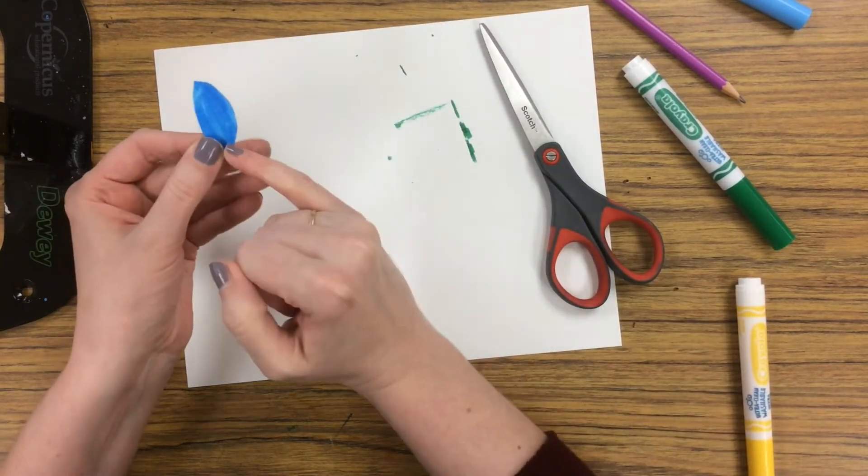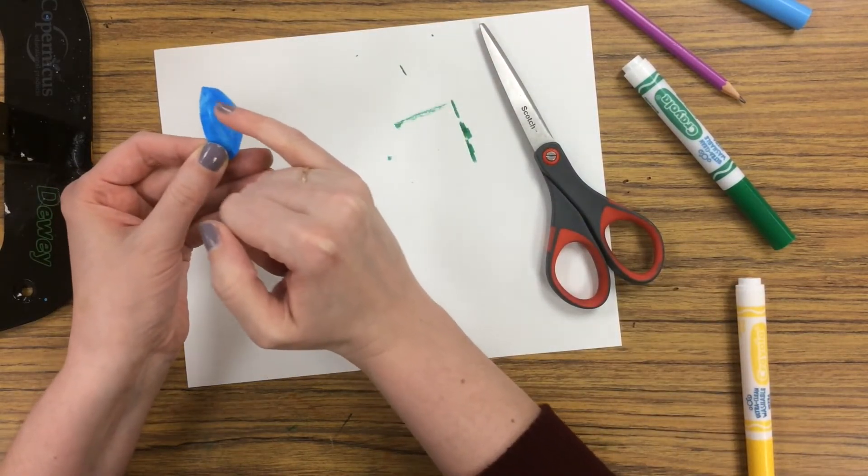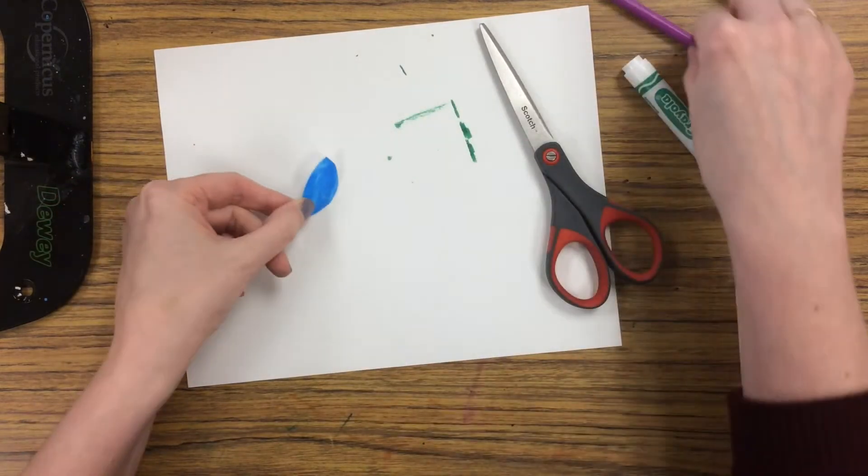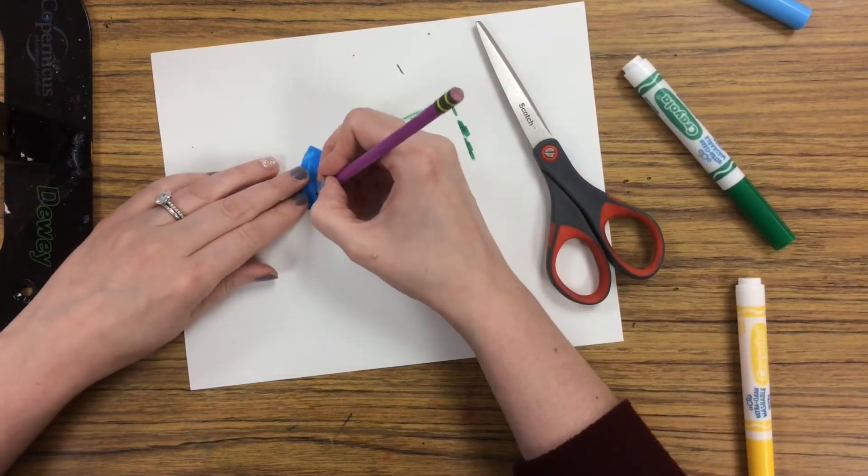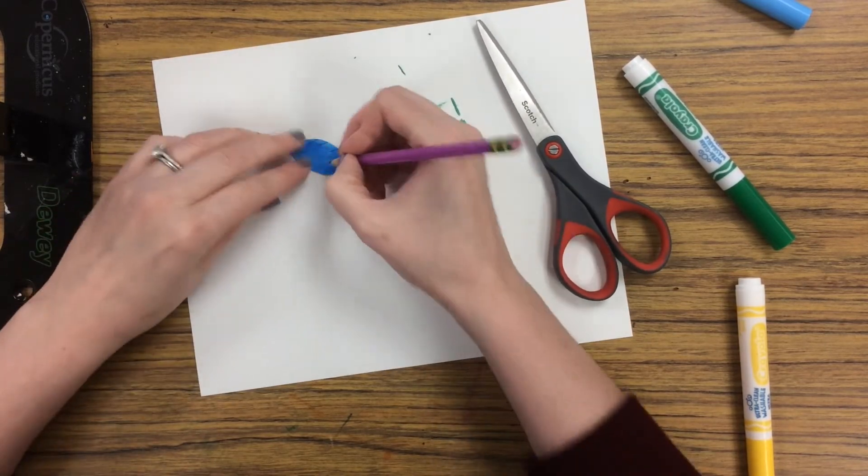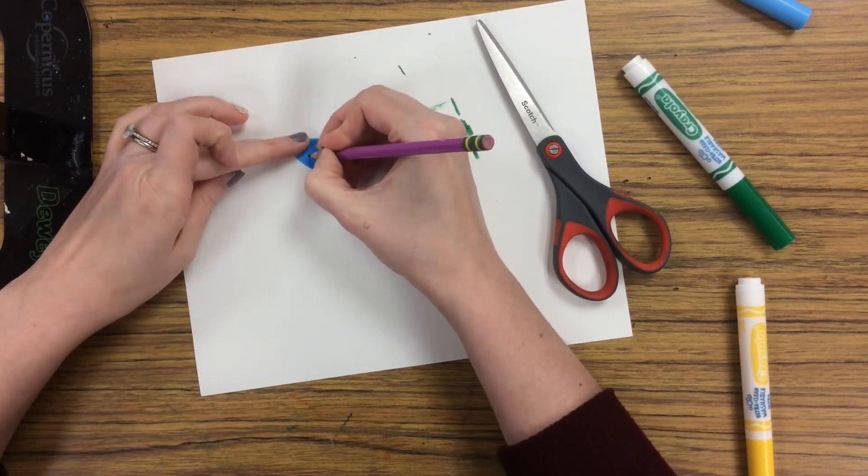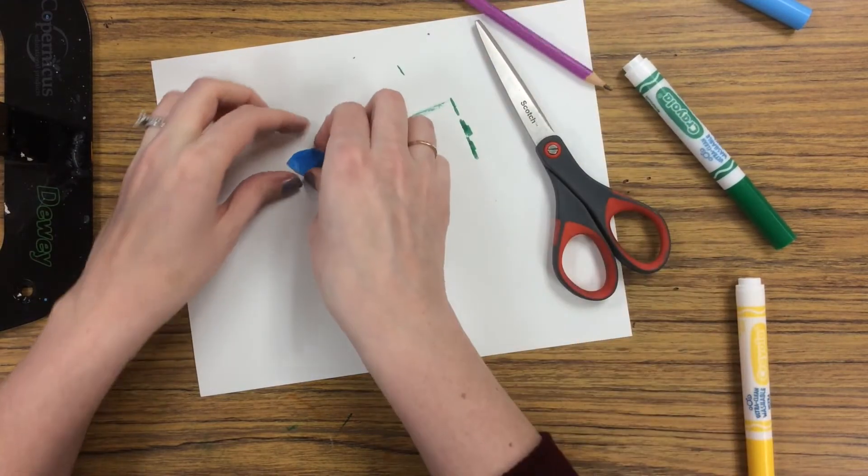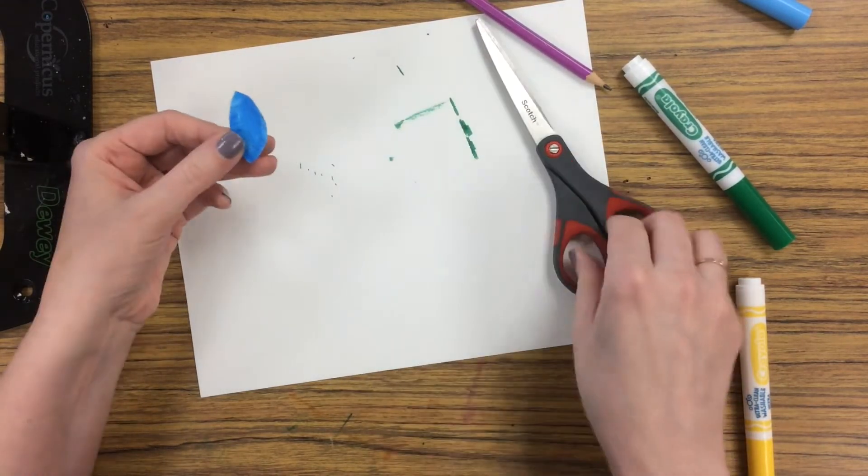Now we're just going to be cutting little diagonal slits in both sides of this. Again, if it's easier, use your pencil and draw those lines before you cut. Just like that. This can also be a cool way to do a leaf.